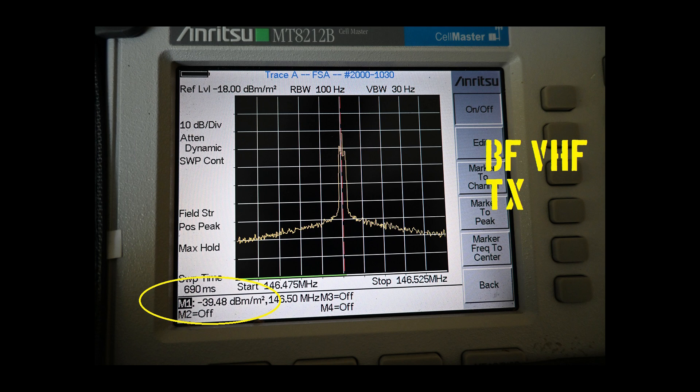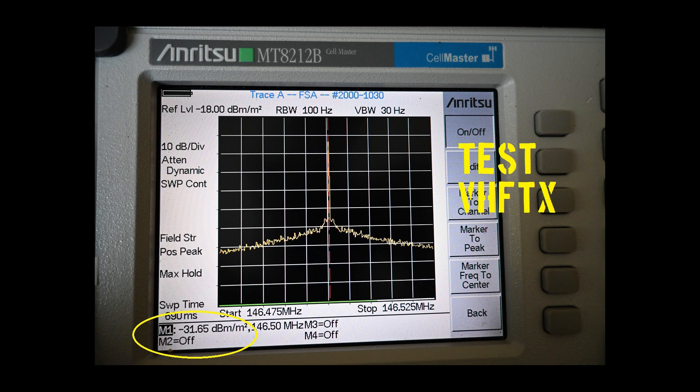Now moving along to our transmit field strength testing. Our antennas under test are connected to the Baofeng mini as a test transmitter, running on high power located 30 yards away from our spectrum analyzer, which is receiving the signal with a standard reference antenna. The Baofeng antenna is providing a signal of minus 39.5 decibel milliwatts per square meter, and our $3 duck is providing almost 8 dB of gain over the Baofeng.